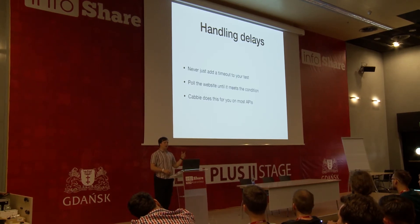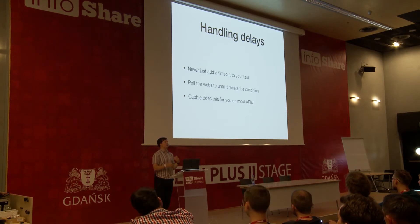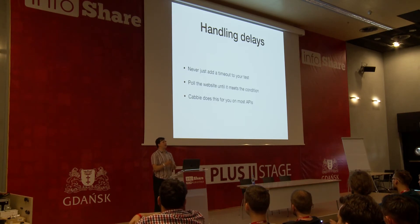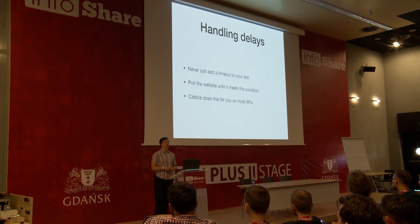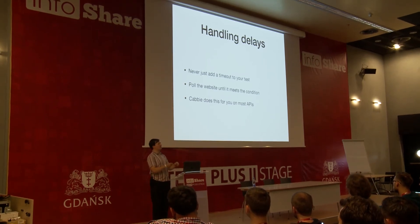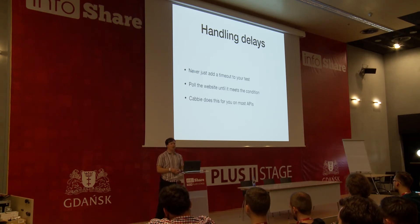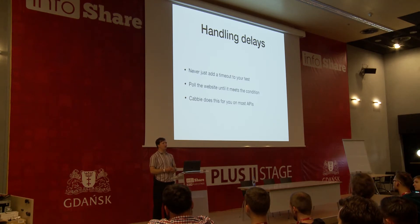Cabby, the library I've been using and developing, does polling on most of its APIs by default. For example, if you request an element and it doesn't exist, it will keep retrying to get that element until either it does exist or a timeout of a few seconds is reached. It has separate APIs without that behavior — if you're trying to see if an element exists and you're not sure, you can use a try-get-element and it will fail more quickly. But by default, it does this retrying for you on most of the APIs.